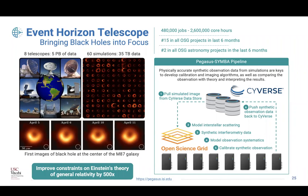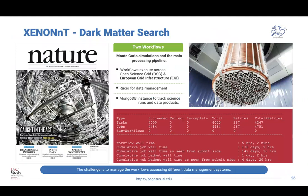An example from the Event Horizon Telescope: they use Pegasus to run the simulations shown in the middle picture, comparing them to observed images to determine characteristics of the phenomenon seen with the telescope. They are integrated with CyberShake, which is a portal environment with a lot of data management. Also, XENONnT, a high-energy physics experiment, has their own data management — Rucio — and uses MongoDB for tracking workflow runs. They run on the European grid infrastructure, and we interface with those capabilities.